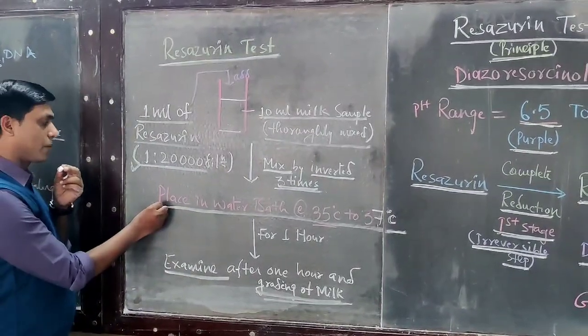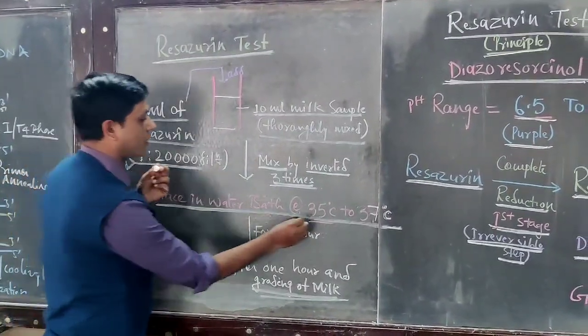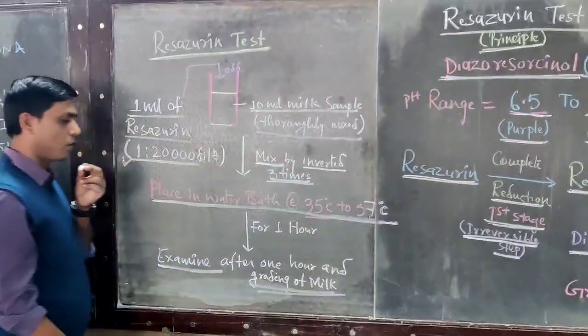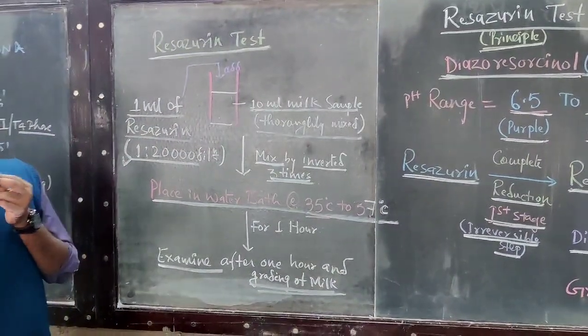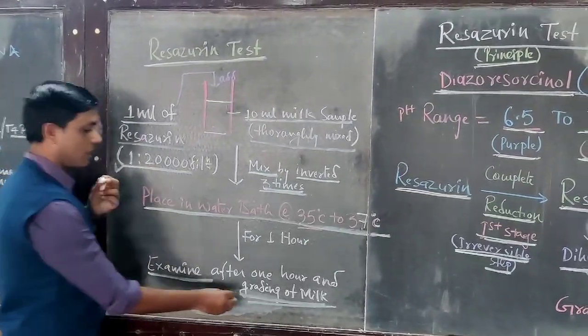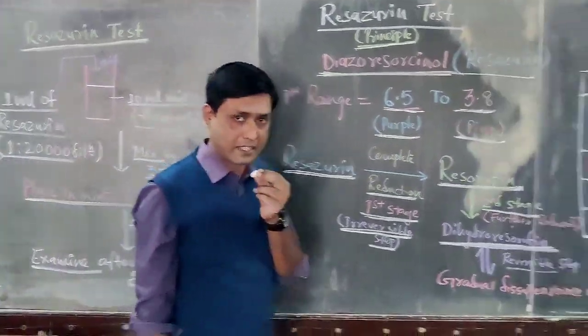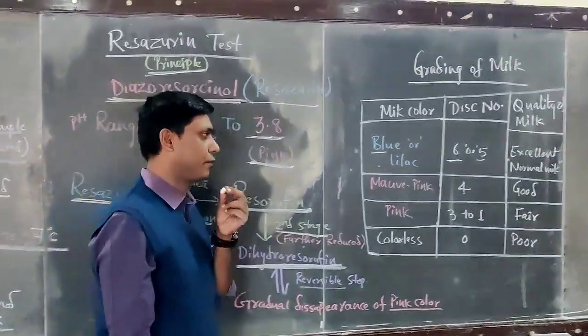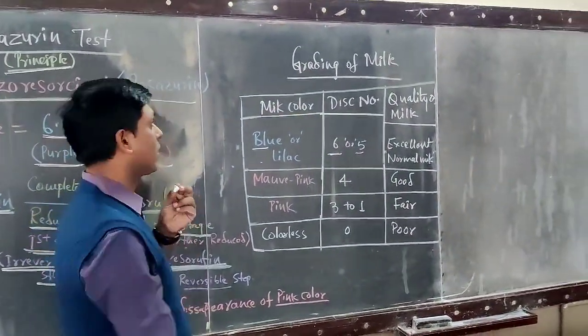Then incubate in a water bath at 35 to 37 degrees Celsius for one hour. After one hour, examine the color of the milk. Based on the milk color, grade the milk as excellent, good, fair, or poor. This is the interpretation of results.